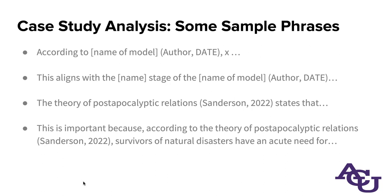Here are a couple of sample phrases that might be helpful in referencing theories and models — we're going to look at this a little bit more in the outlining stage. Generally, you want to identify the theory or model you're referring to very specifically. Now, theory and model names in APA style are not capitalized — they're treated in sentence case rather than as proper nouns. It's only when you're referring to the author or authors that you'd be capitalizing things. For example, you could say "Sanderson's theory of blah blah blah" — Sanderson would have the first S capitalized because it's a proper noun, but the rest of the theory name should just be in lowercase.